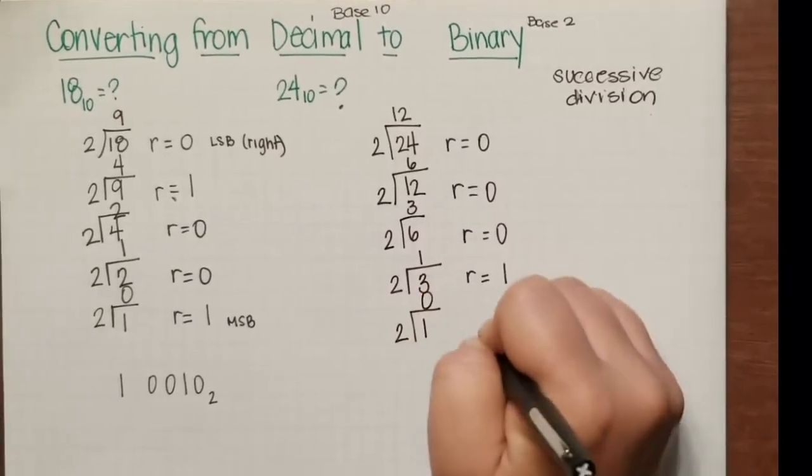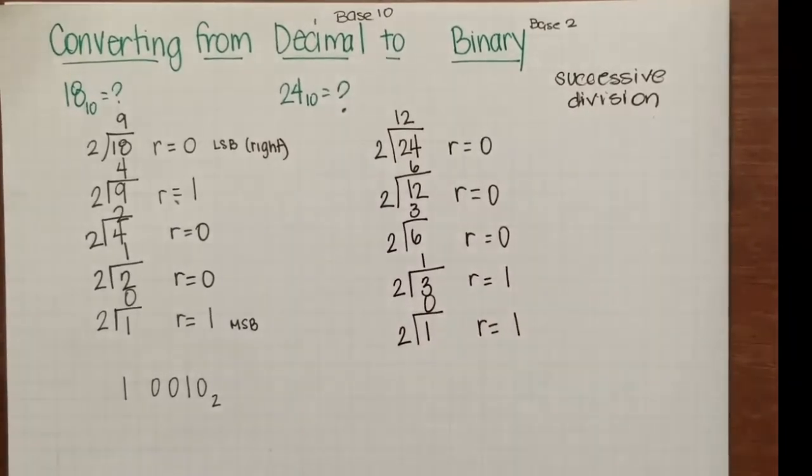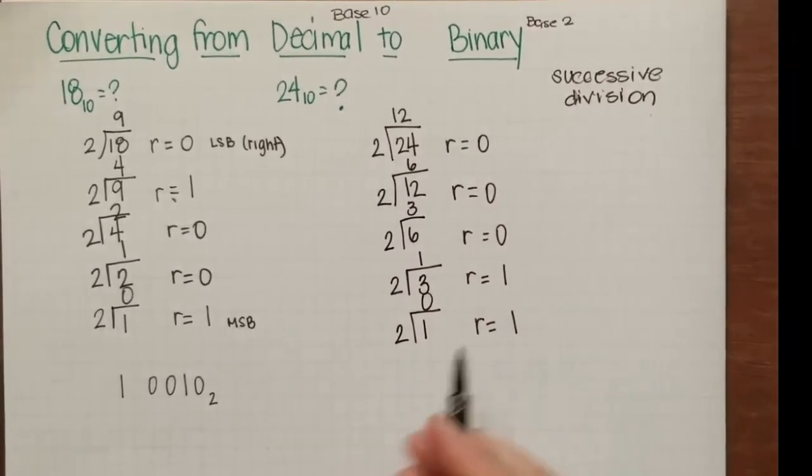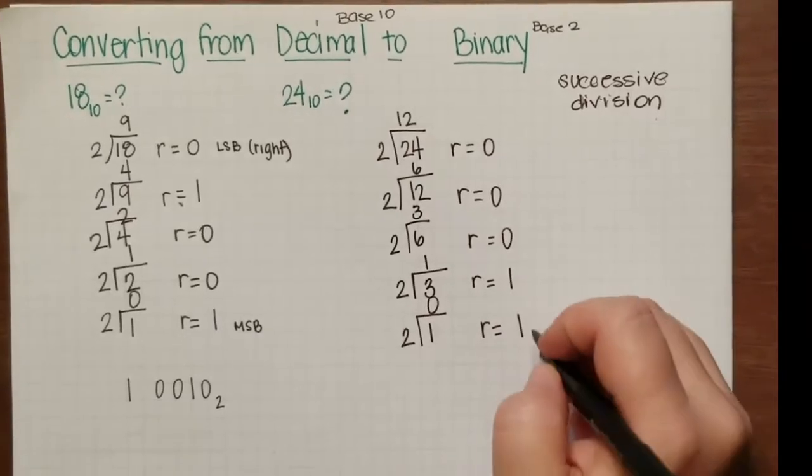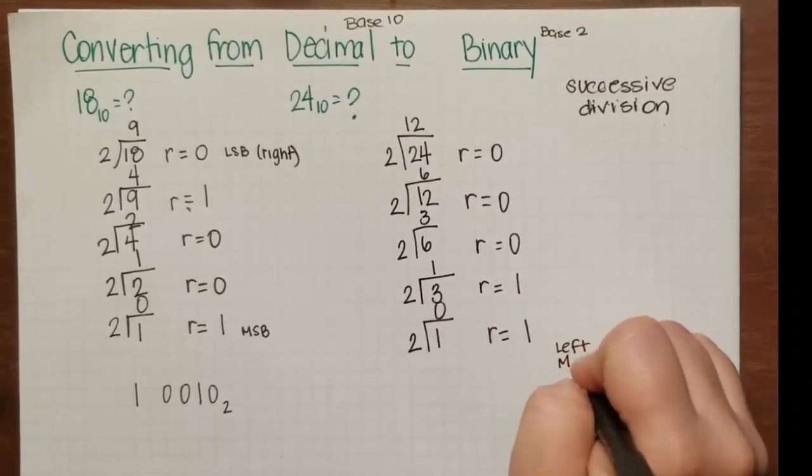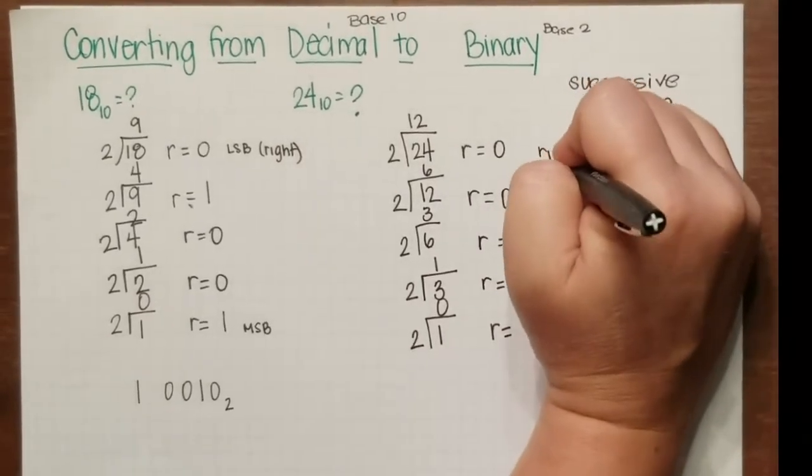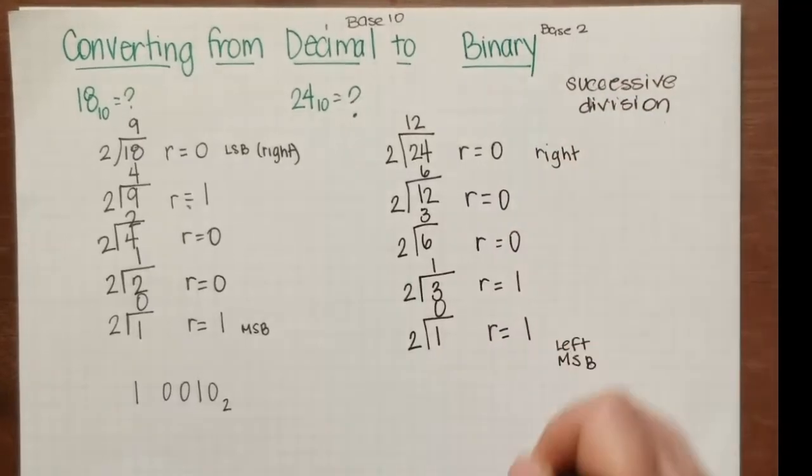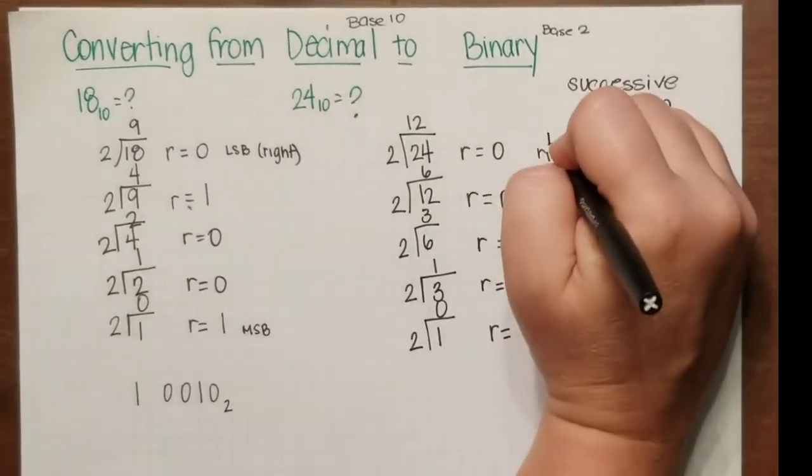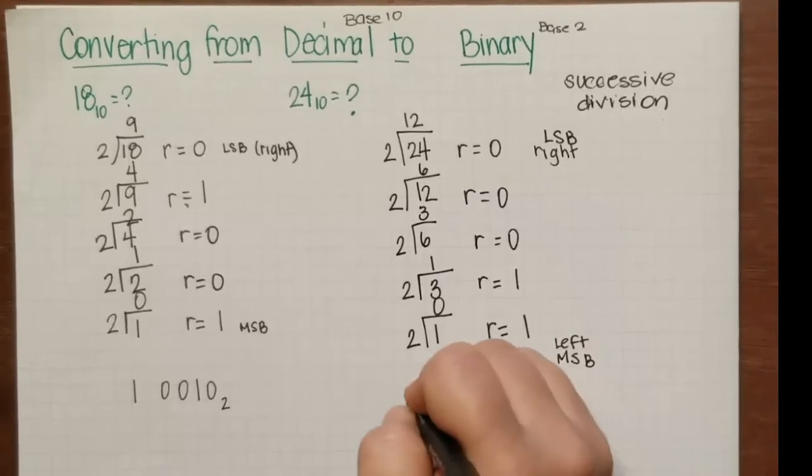I'll take the 1. 2 divides into 1 no times with the remainder of 1. So now we write this, and this goes on the left—it's the most significant bit. This goes on the right—it's the least significant bit. So that would be 1 1 0 0 0 base 2.